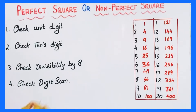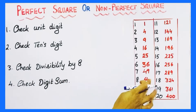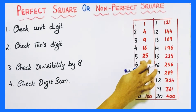How to identify a perfect square or non-perfect square? To identify whether it's perfect or non-perfect, first let's see what are perfect square numbers and what is their speciality. A perfect square number will always have the unit digit 0, 1, 4, 9, 6, or 5.